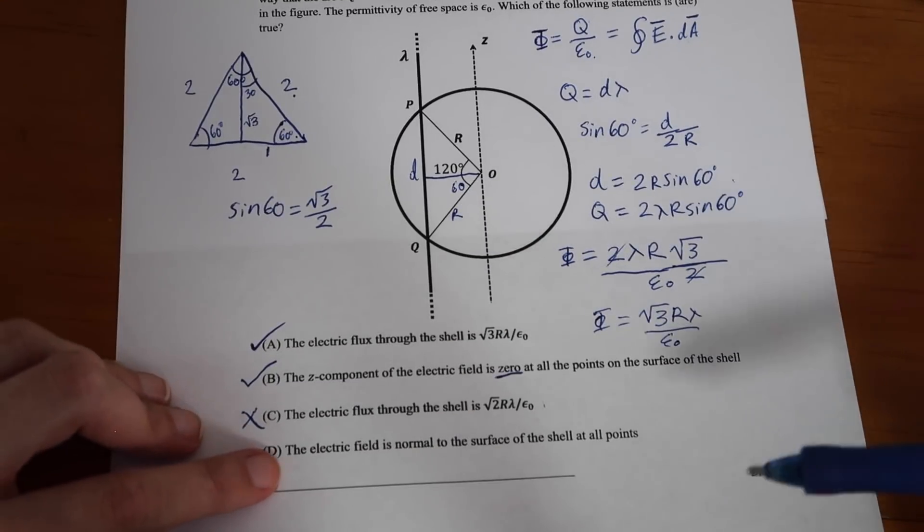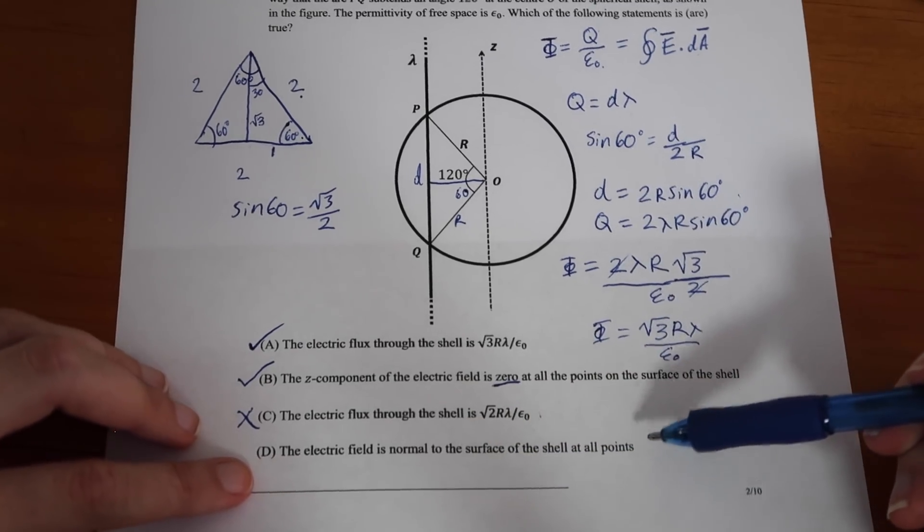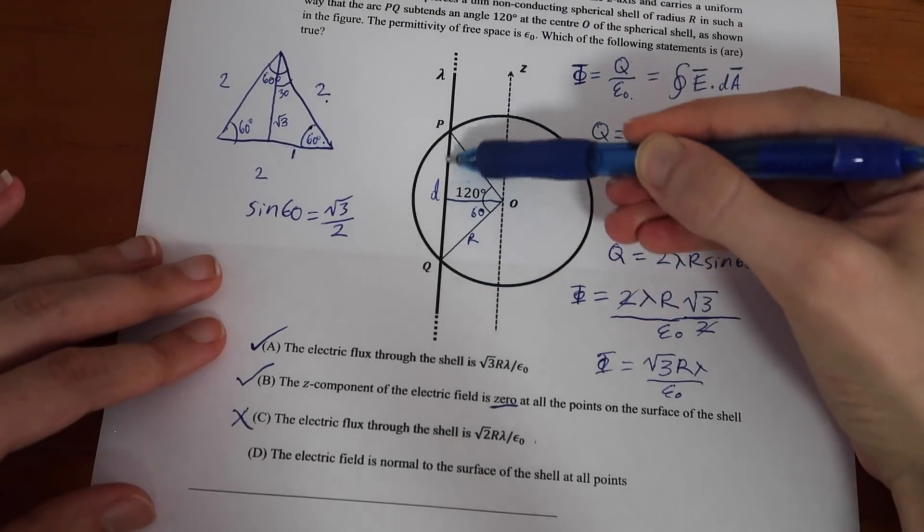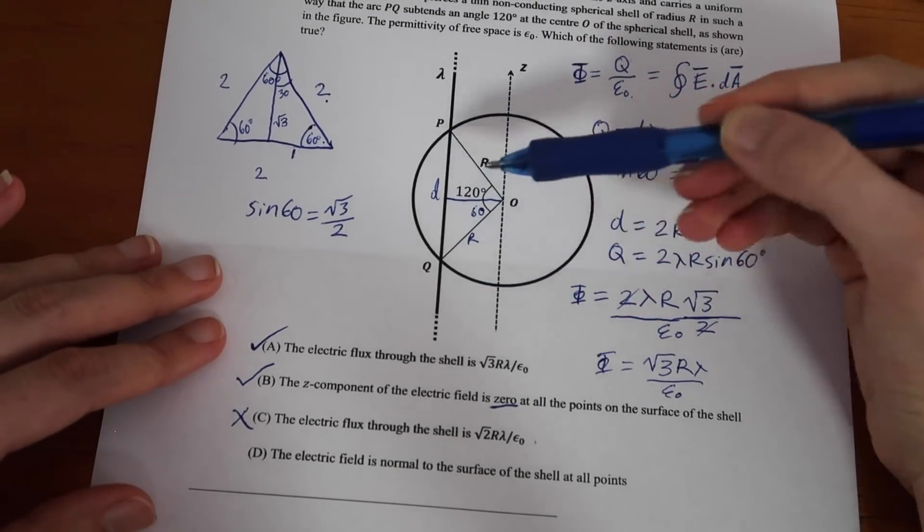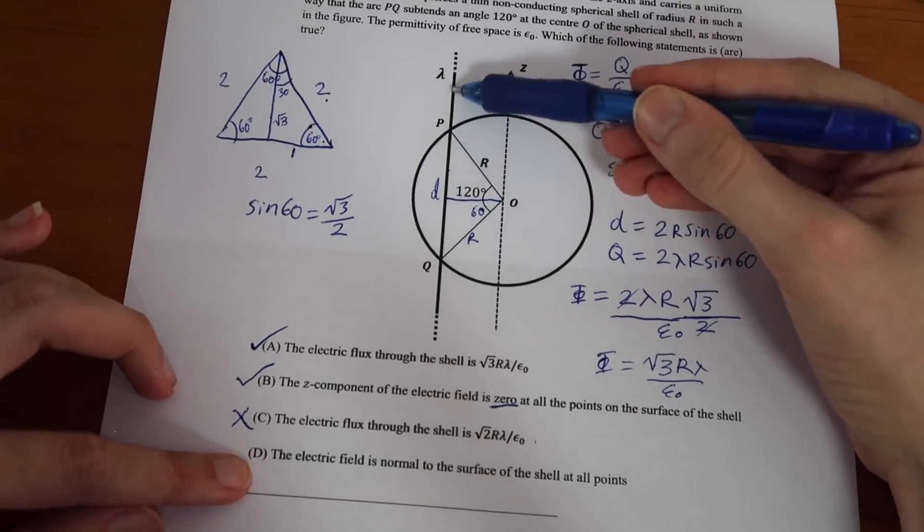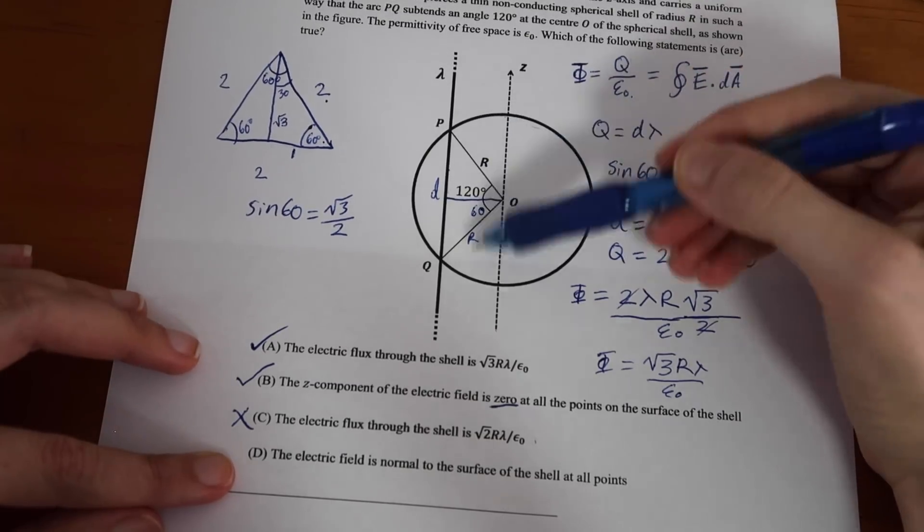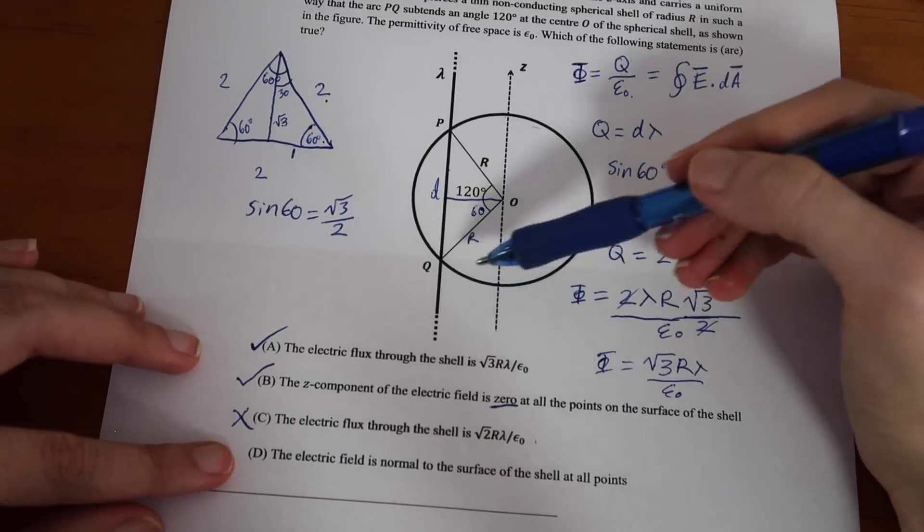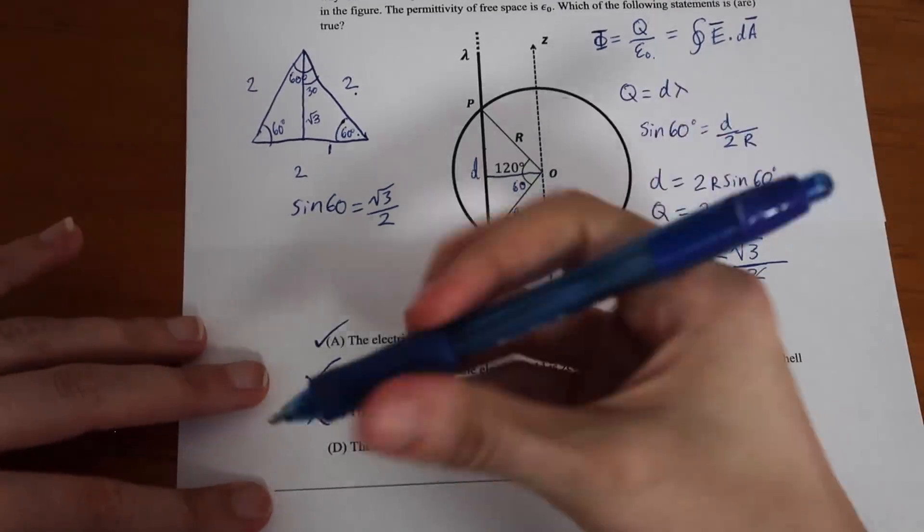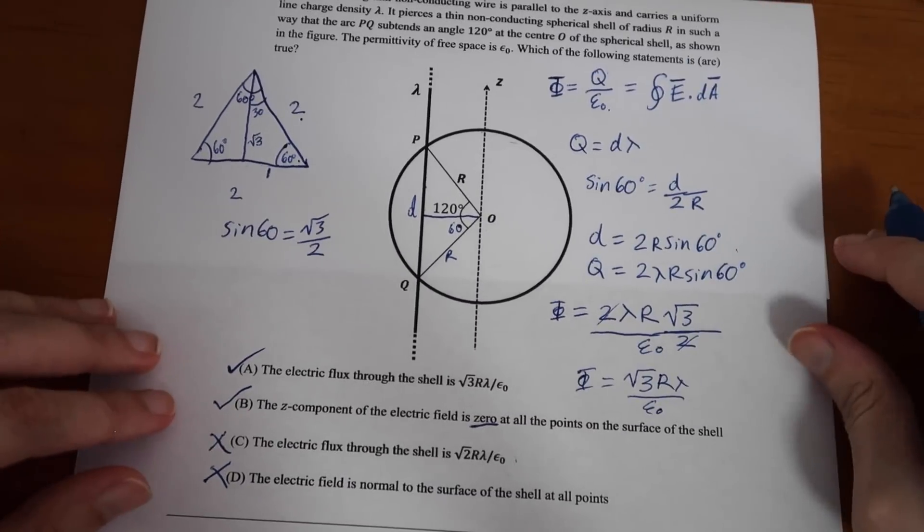All right, so let's look at D. The electric field is normal to the surface of the shell at all points. Well, what I just said was that out of this line here, the electric field is always going to be radial. So, if it's radial out of here, it might be perpendicular to the shell. But, at points here, as the shell is curving, it's not always going to be normal. So, it's not always going to be perpendicular. So, I'm going to say that D is not true. That's all for that question.